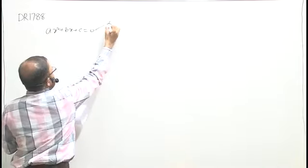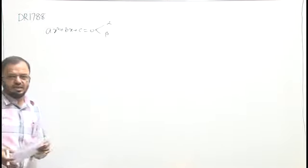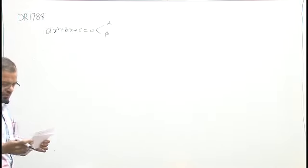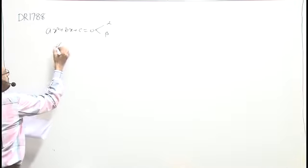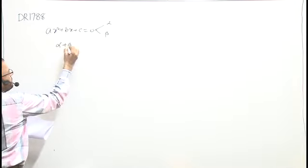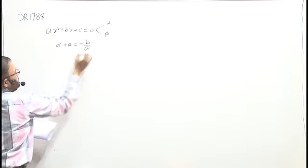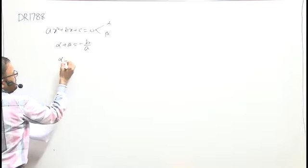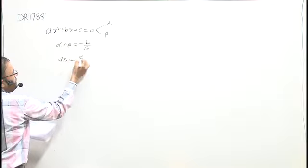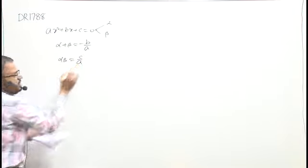इसके roots अगर alpha और beta हैं, तो हम लिखेंगे यहाँ पर sum of the roots and product of roots. Alpha plus beta is equal to minus B by A, alpha into beta equal to C by A.